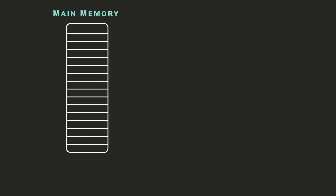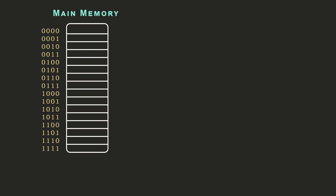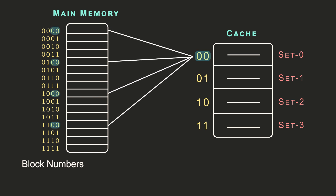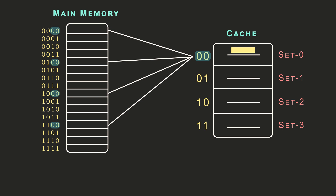This is actually a combination of direct and associative mapping. Cache lines are grouped into sets, where block number least significant bits are matched with set numbers — that is direct mapping. Inside a set, you are free to place anywhere — that is associative mapping.